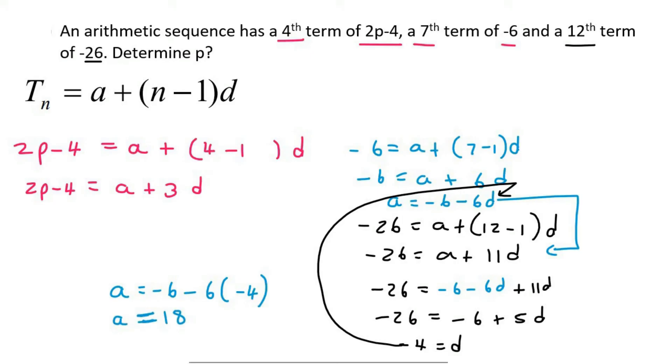Now that we have a and we have d, then we can find p. So we can plug everything into here. So 2p minus 4 equals a, which is 18, plus 3 times d, which is negative 4. We would eventually see that 2p is equal to 10. And if you divide, you would find that p is 5.